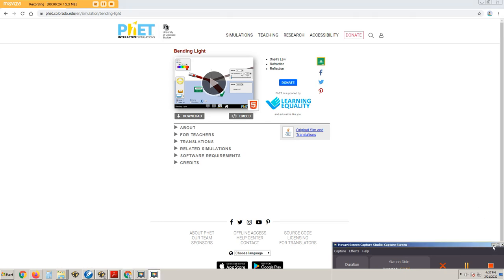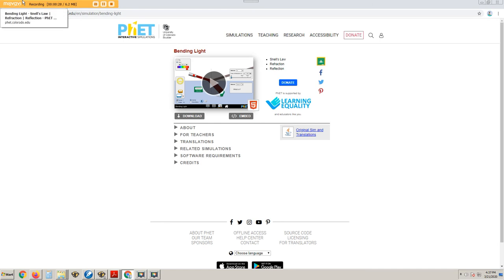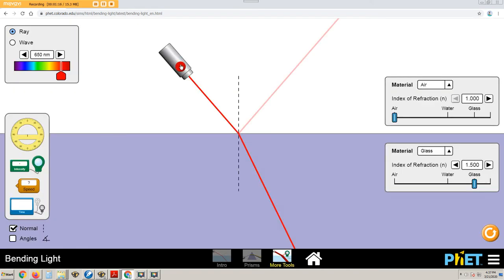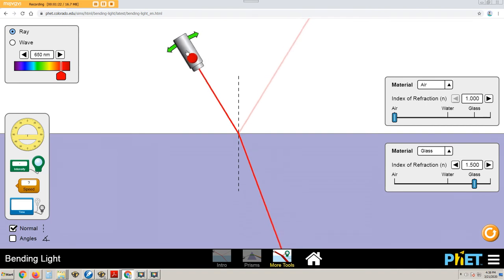If you run this phet.colorado.edu website, you can bring Snell's Law to life. Click on more tools. Click on the red dot to turn on the laser beam and change the angle of the incident beam. Drag out the protractor.